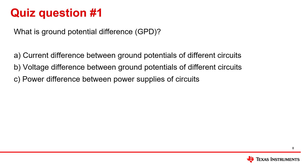Now for some quiz questions. Please pause the video on each question to take some time and answer. The first question: what is ground potential difference, or GPD? The answer is B — the ground potential difference is the voltage difference between the ground potentials of different circuits.